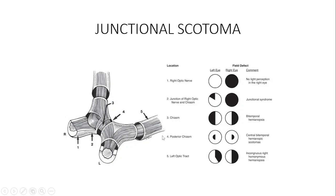Let us learn about visual fields in the visual pathway. In this picture, the right eye is here and the left eye is here. You have the right optic nerve and the left optic nerve, where they join together to form the chiasma. When interpreting a picture, you need to know their nomenclature and find out where the lesion is found. This is your chiasma; this place is the optic tract, continuing at the back.